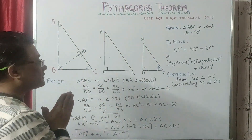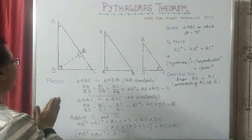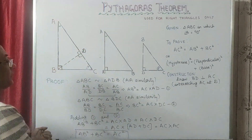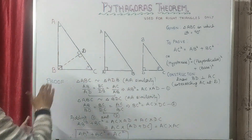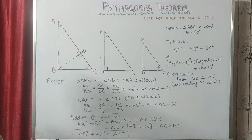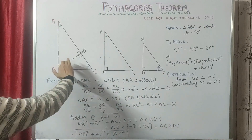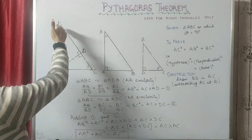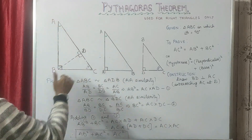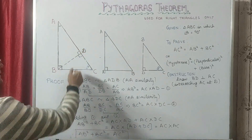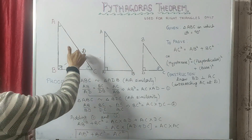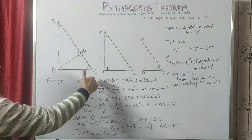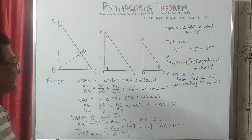So how do we start? First of all, we draw BD perpendicular to AC — a line from B that meets AC at point D such that it is perpendicular to AC.